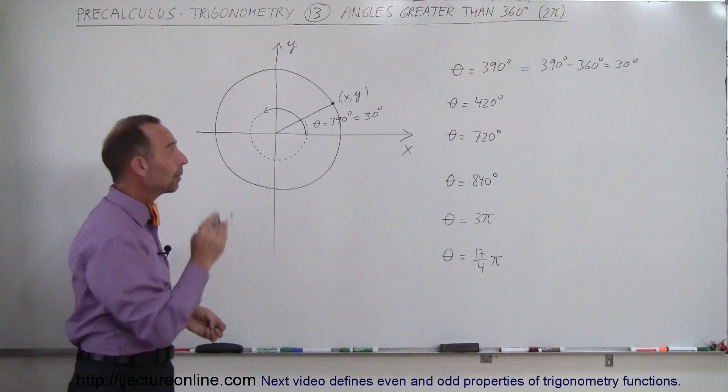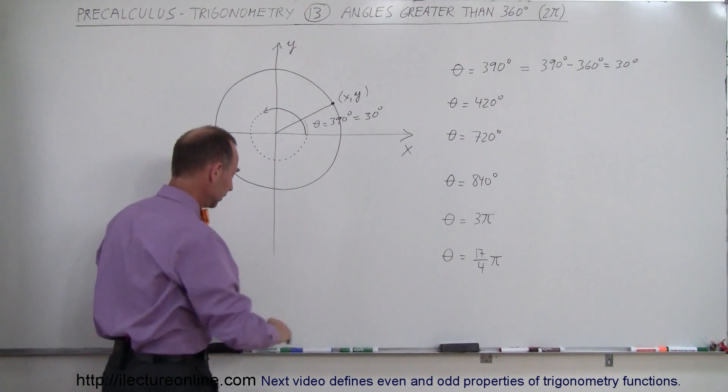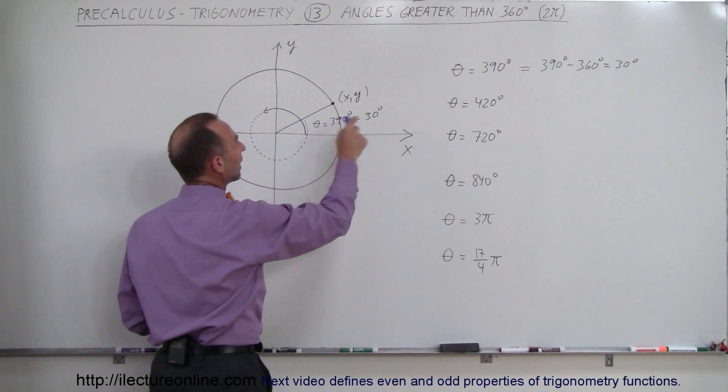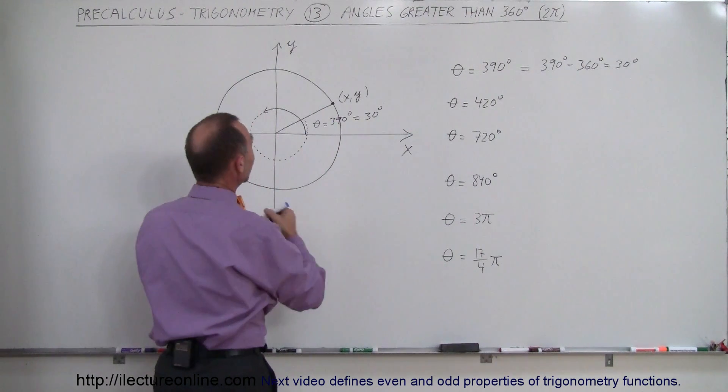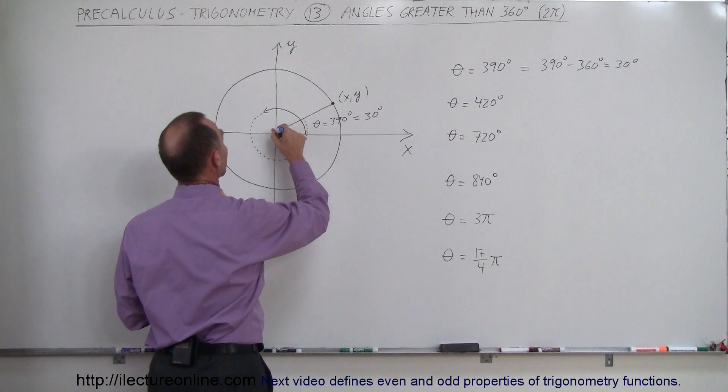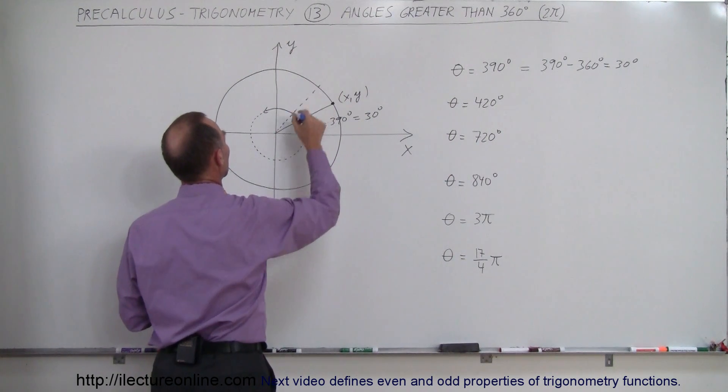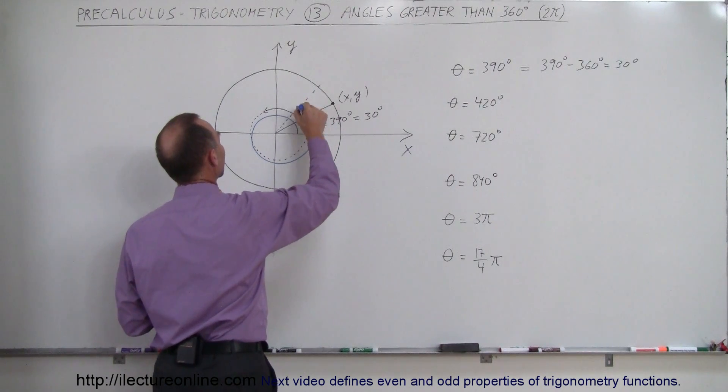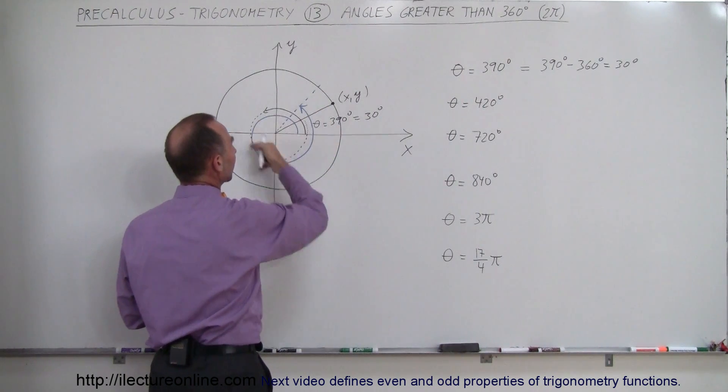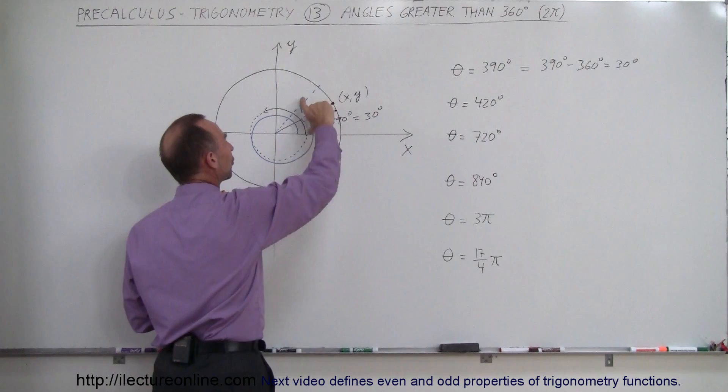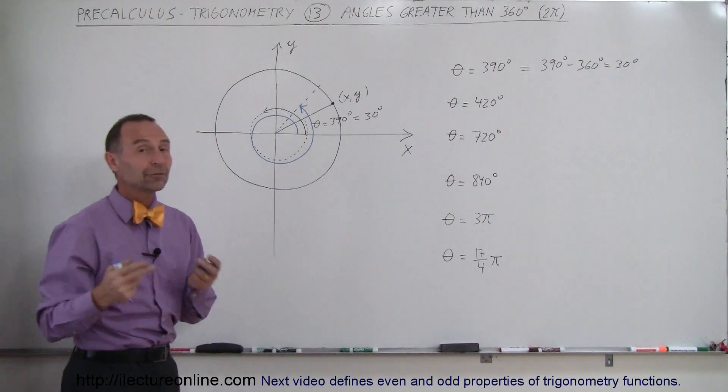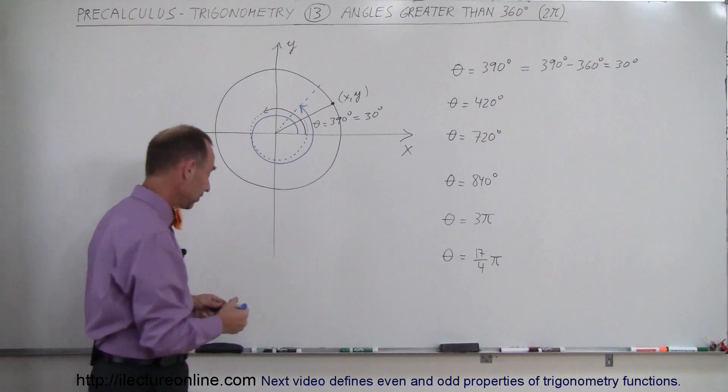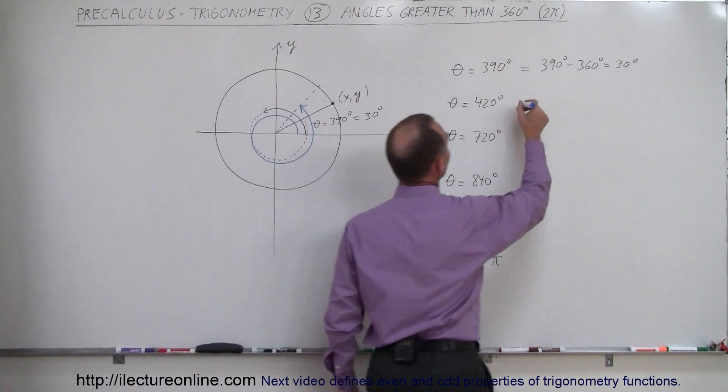We can see here that an angle of 390 degrees really is the same thing as an angle of 30 degrees. What about an angle of 420 degrees? Well, we can go all the way around—all the way around is 360—and then we go another, let's say another 60 degrees like so. So if we go all the way around and come back around like that, we can see that going around is 360 plus another 60 is 420, which means that the angle of 420 degrees is exactly the same as an angle of 60 degrees.